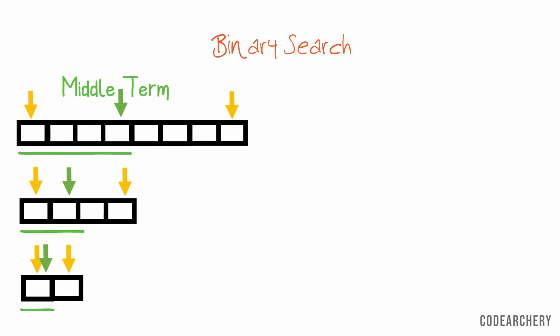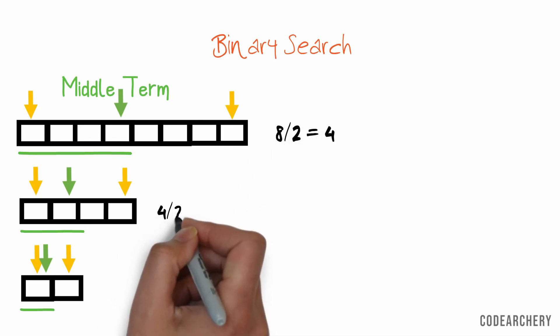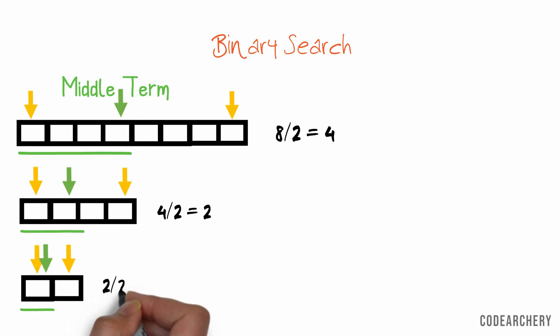So initially we had 8 elements. Then we had 4. Then 2. And finally we got our answer. So we are just dividing by 2. So the worst case time complexity of binary search algorithm is log n to the base 2. Where n will be the size of array or input.